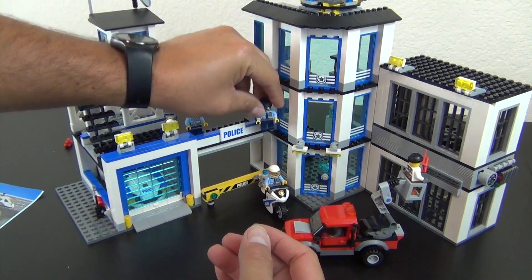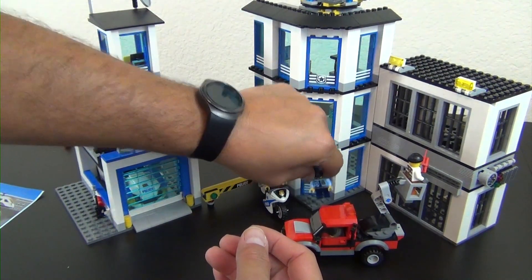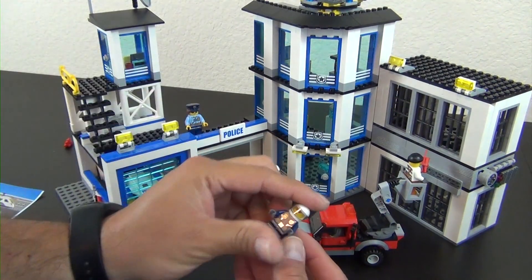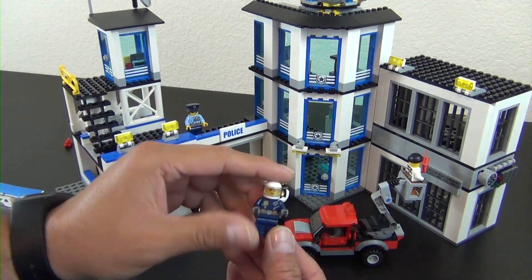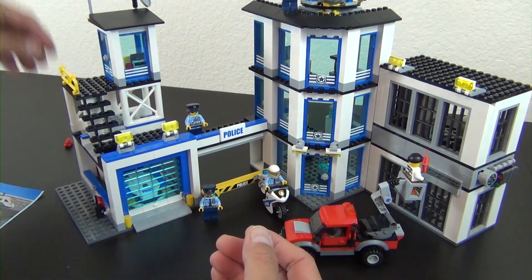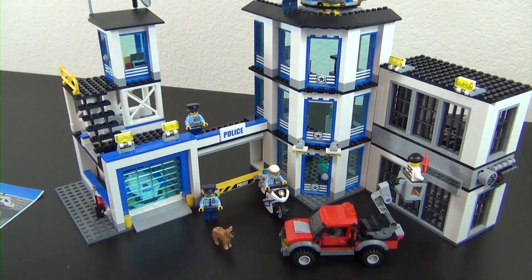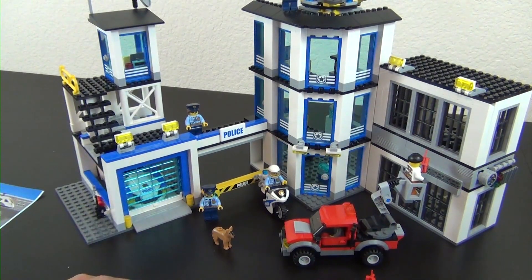We have the police car, we saw that in the last video where I was showing you how this little launcher piece works. Here's the motorcycle cop, so you have a motorcycle. You have this female police officer, you have this male police officer. This is the helicopter pilot, so I'll put her up there with the helicopter. Then you have a police dog and another stick of dynamite.